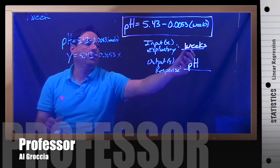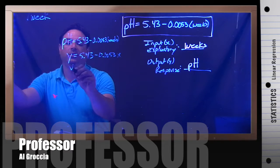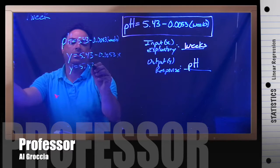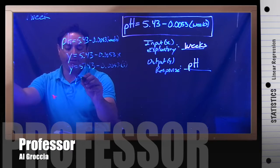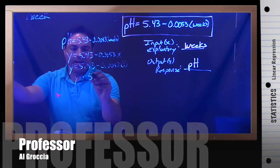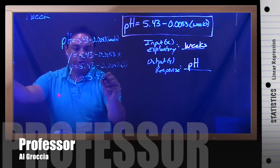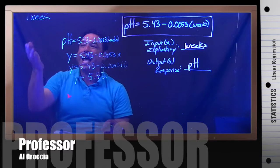So one week refers to x, so we would plug in 1 in for x, which would give us our answer of 5.42. So in a sentence, at one week, the predicted pH will be 5.42.